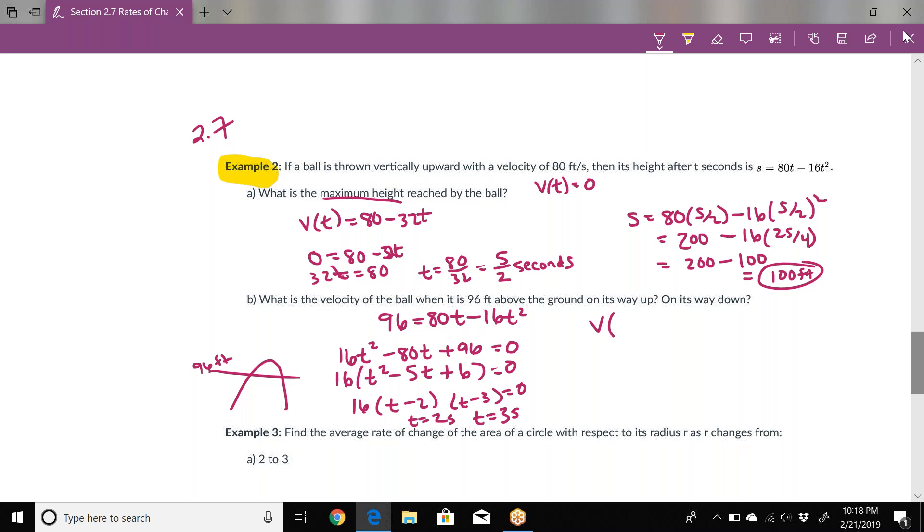The velocity function we had was 80 - 32 times time, so that would be 80 - 32(2) and 80 - 32(3).